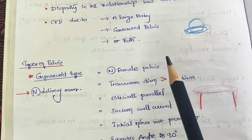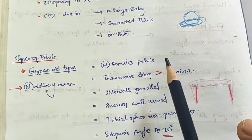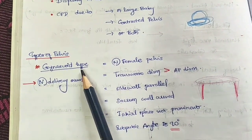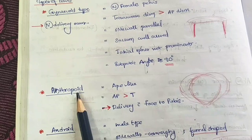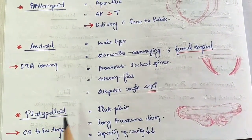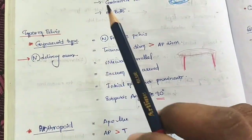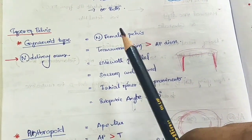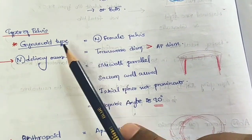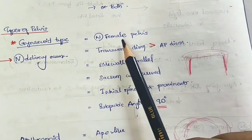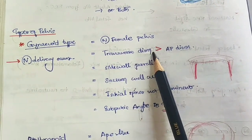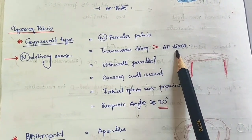The four types of pelvis are: gynecoid pelvis, anthropoid pelvis, android pelvis, and platypelloid pelvis. The gynecoid pelvis is the normal female pelvis.